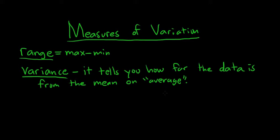If your mean is 10 and your variance is like 1,000, then they're pretty far. But if it's 2, they're pretty close to 10.